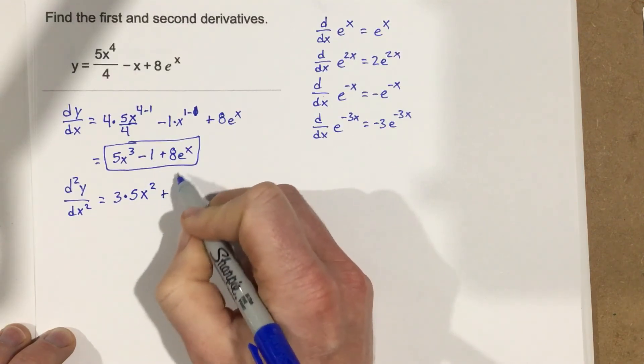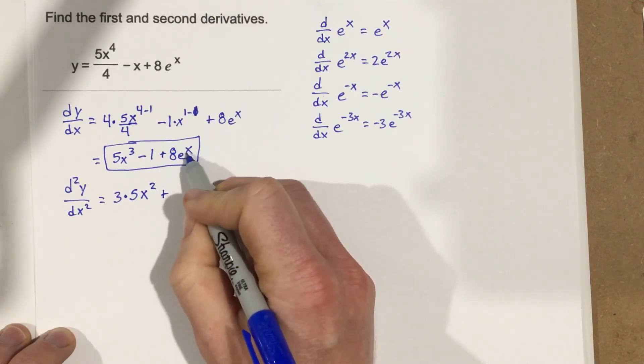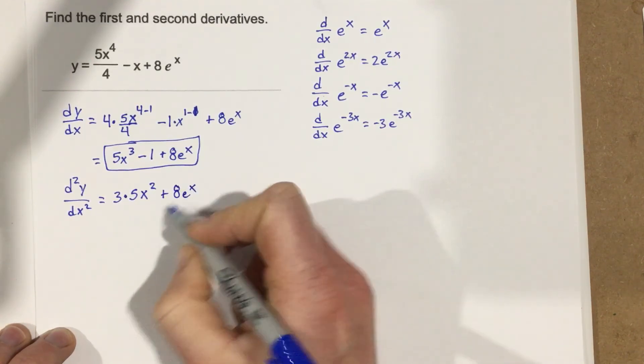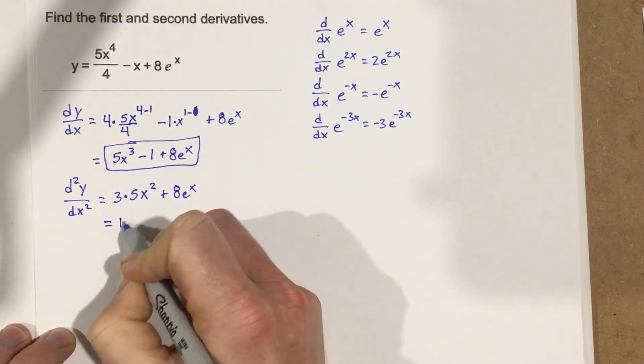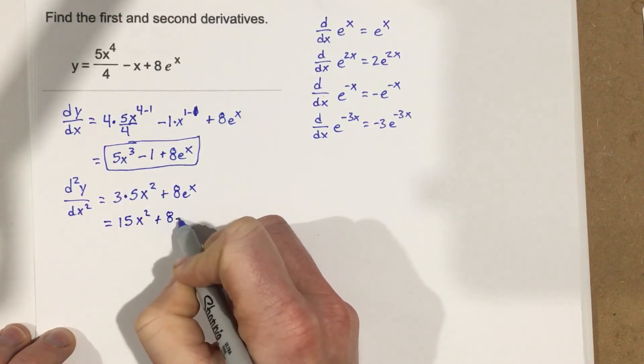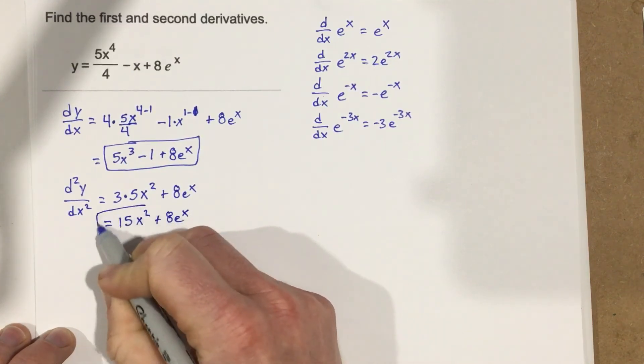And then we have plus, 8e to the x, well, e to the x's derivative is just itself, so it's 8e to the x. So we end up with 15x squared plus 8e to the x. And that's the second derivative.